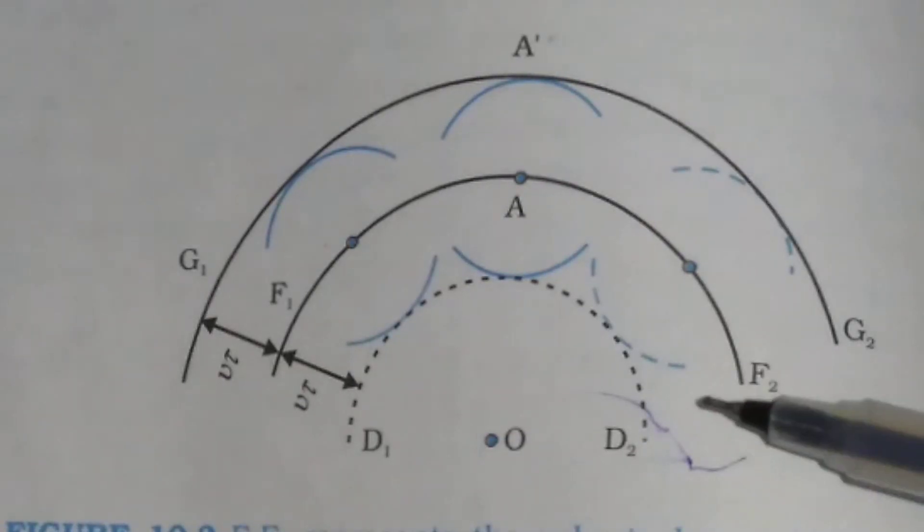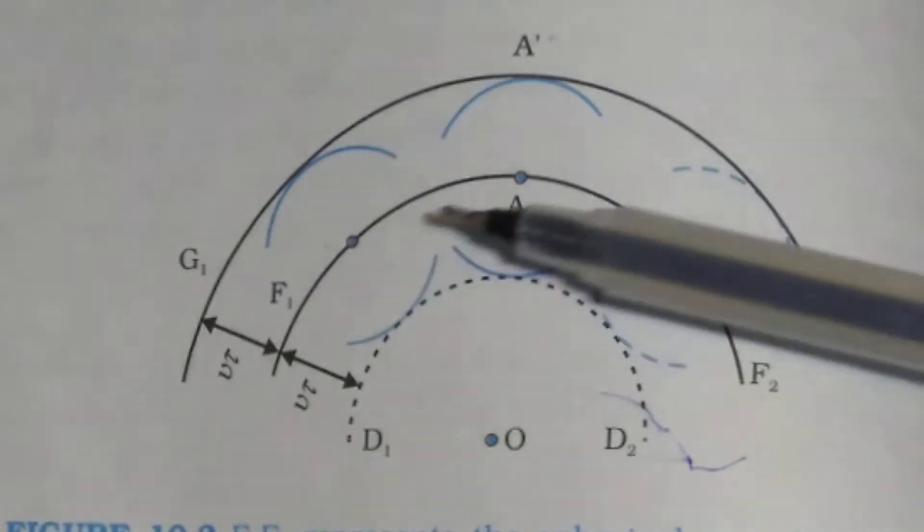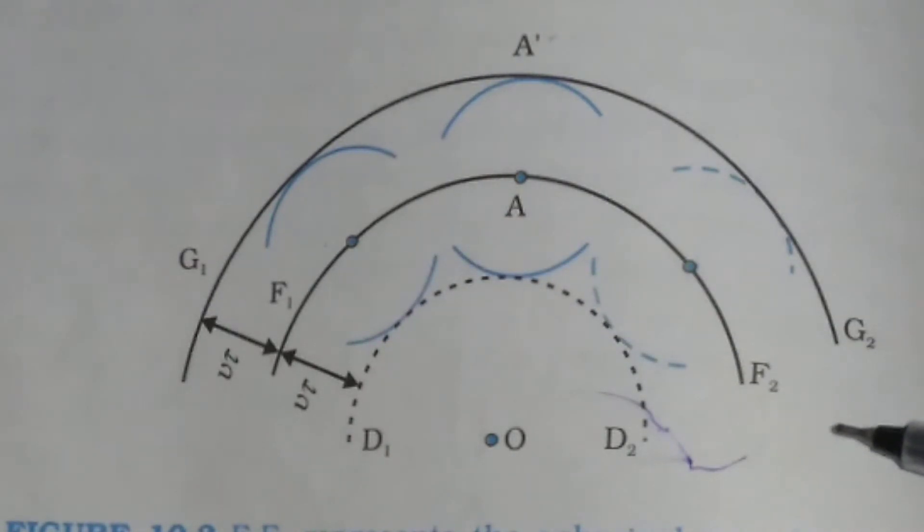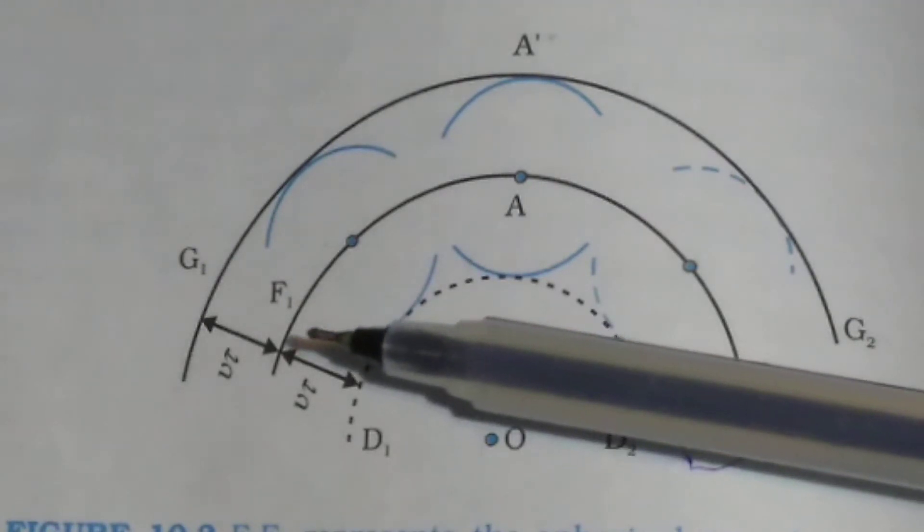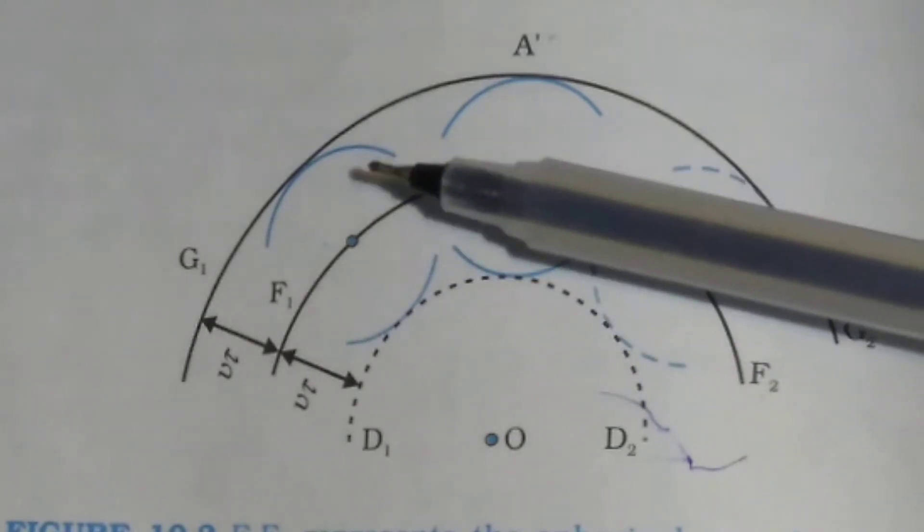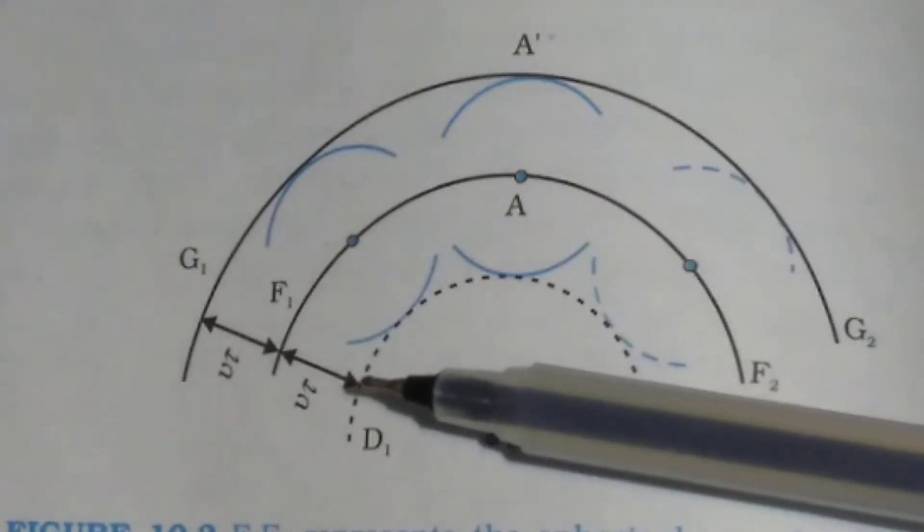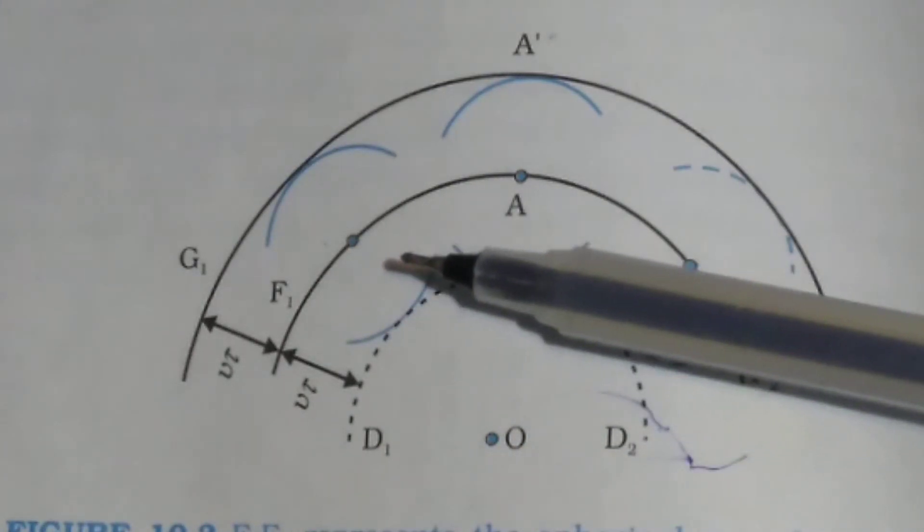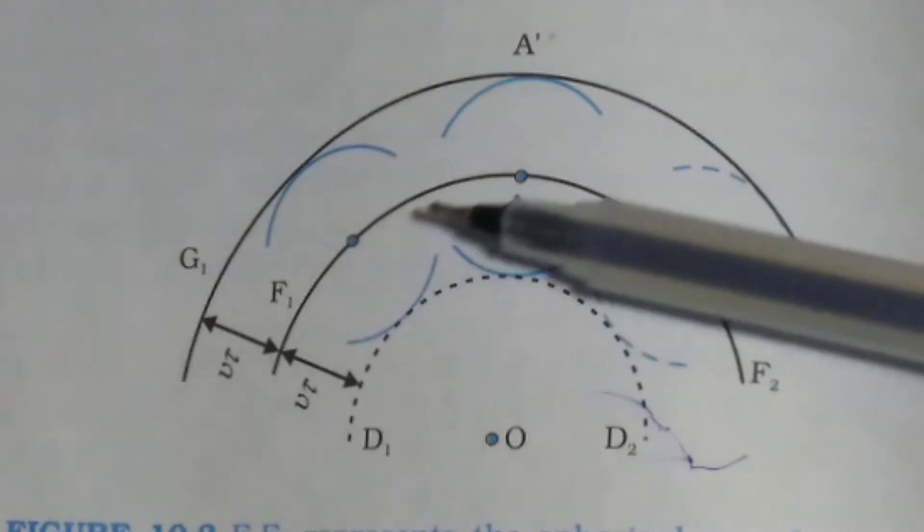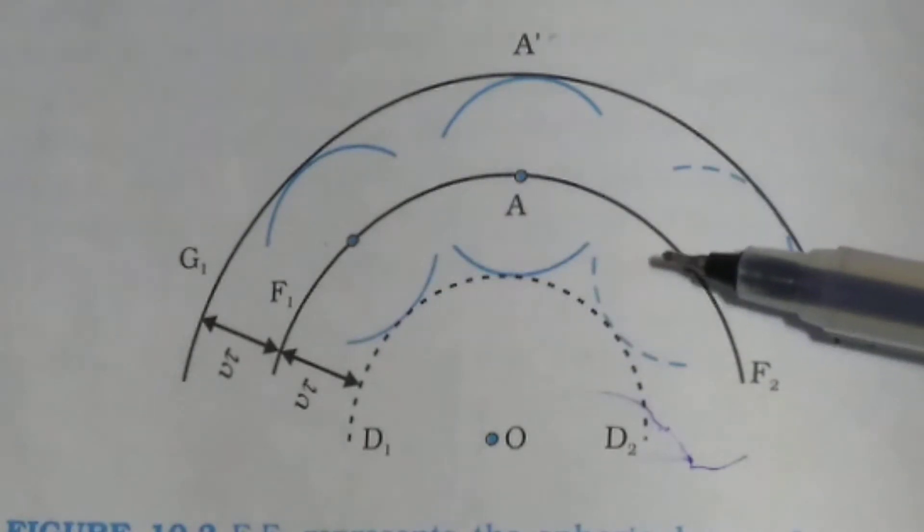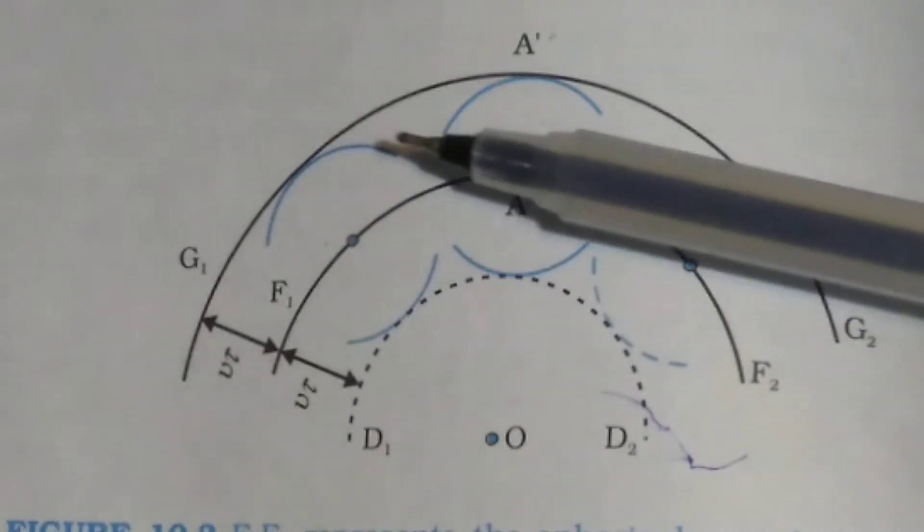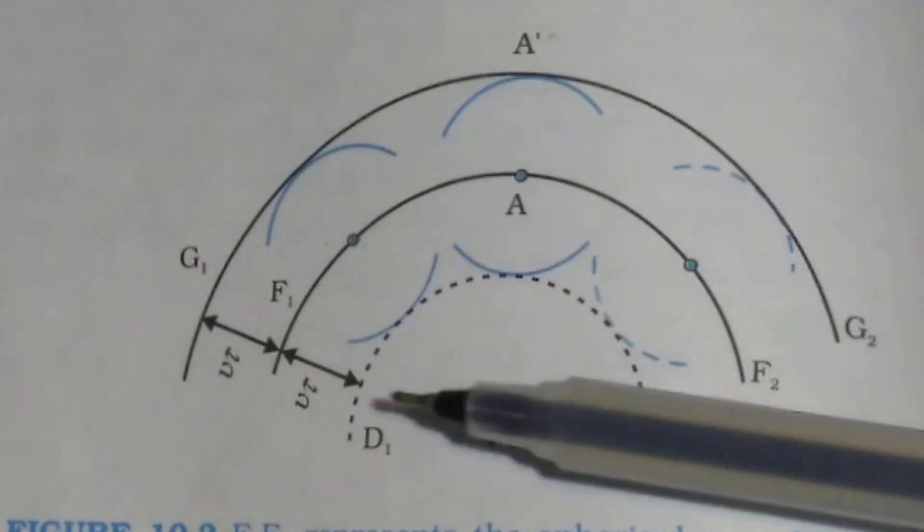As shown in the picture, here F1, F2, it is the spherical wavefront. Draw spheres of radius V tau. This is the spheres of radius V tau from each point of the spherical wavefront. Here, here, here like this. So these are the spheres of radius V tau.